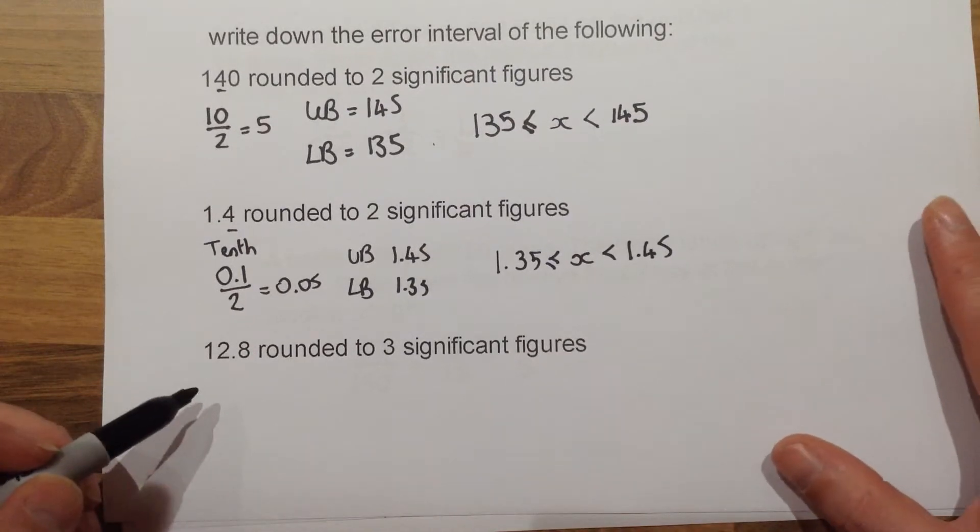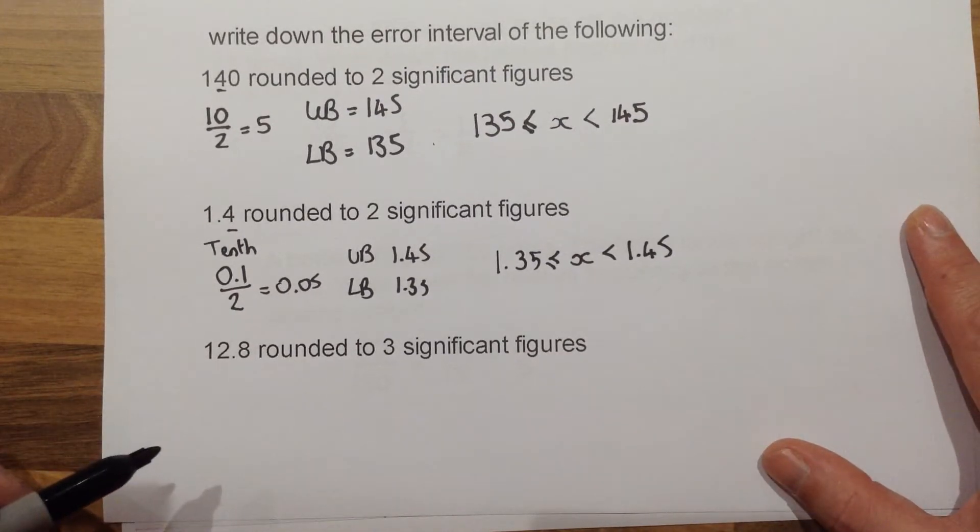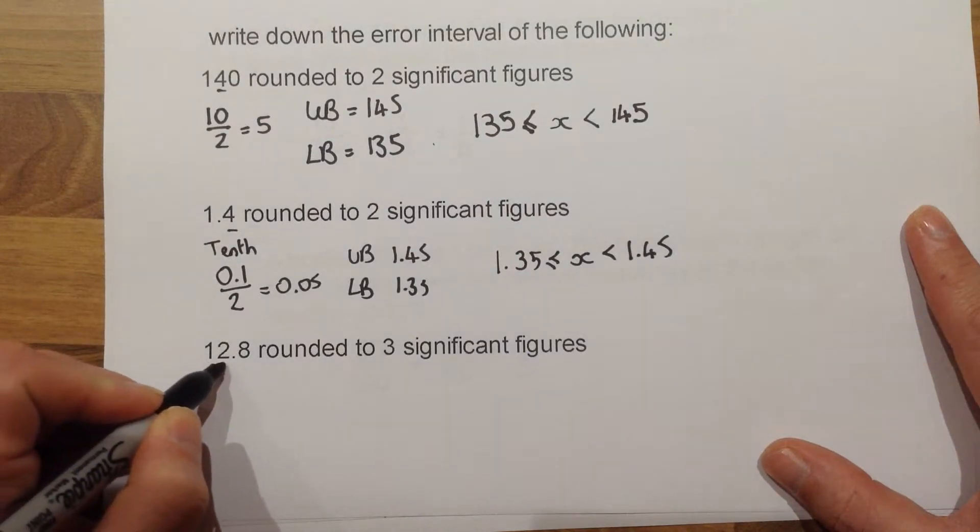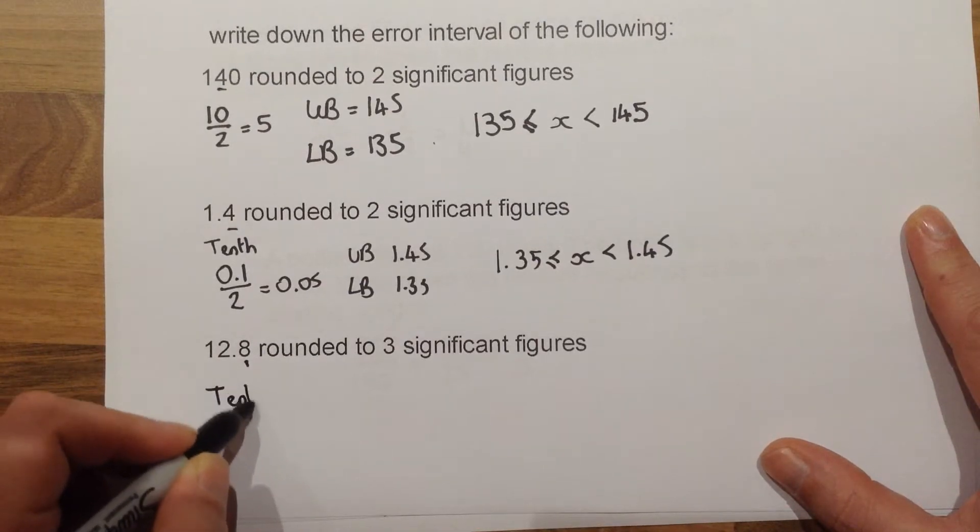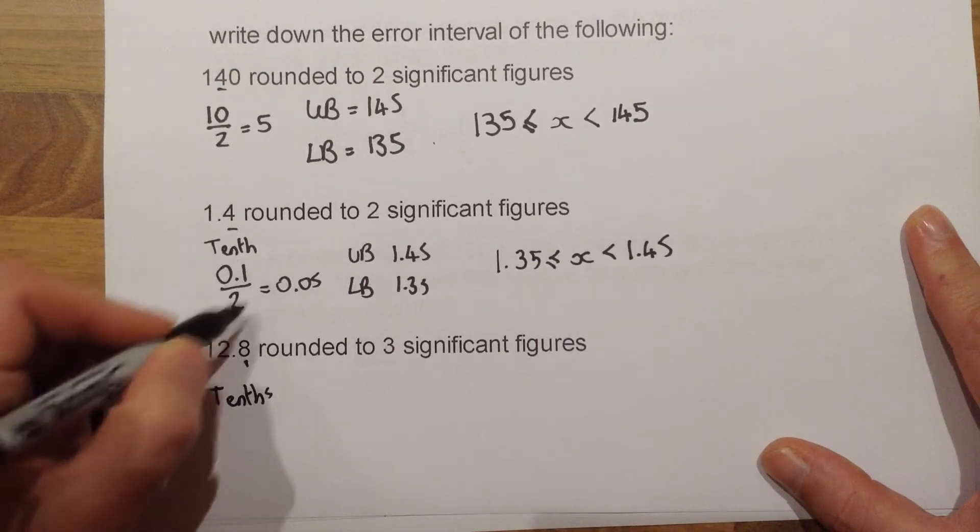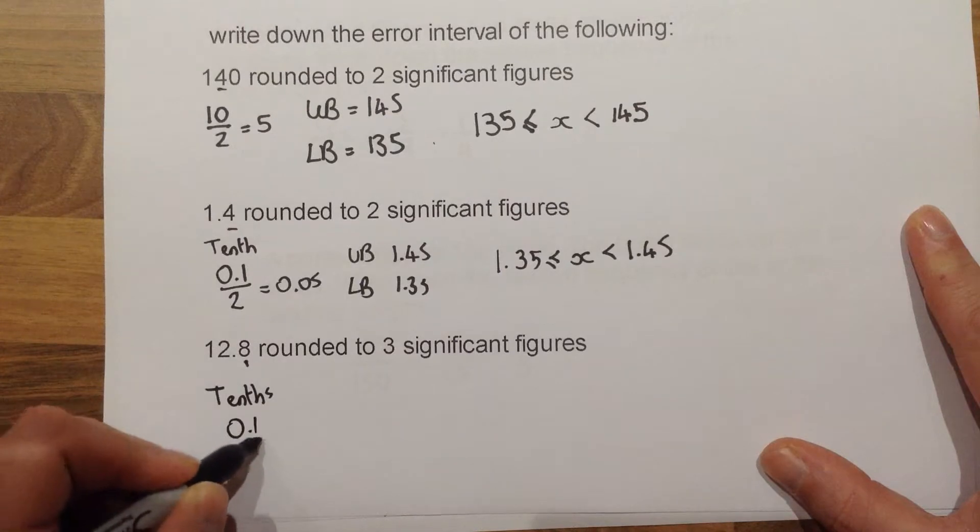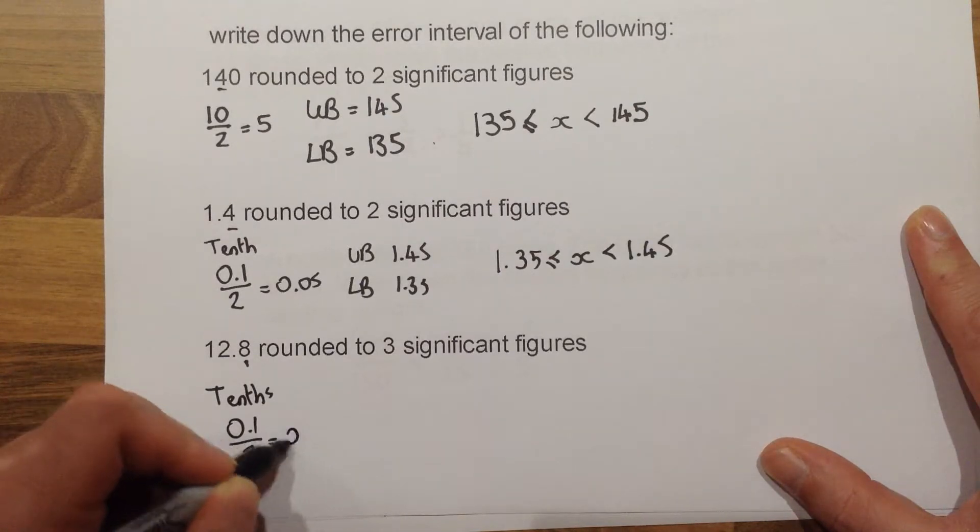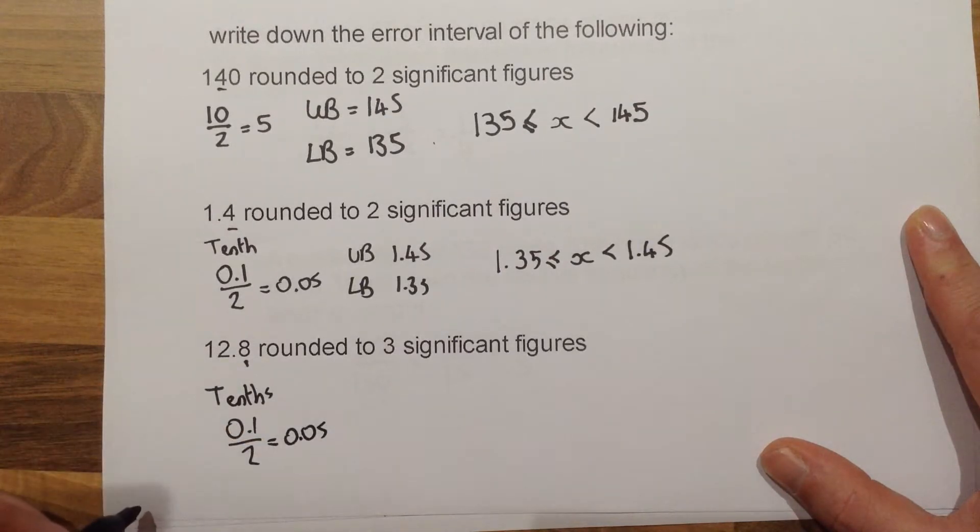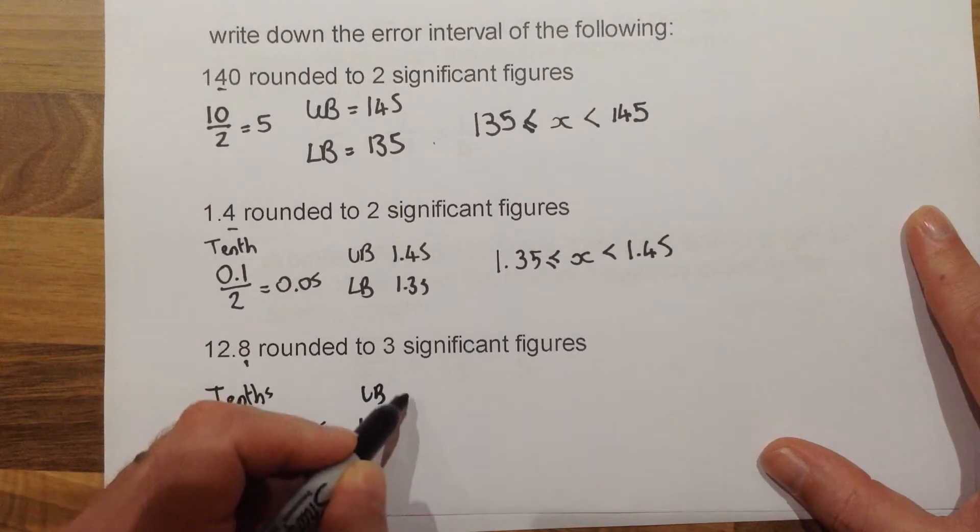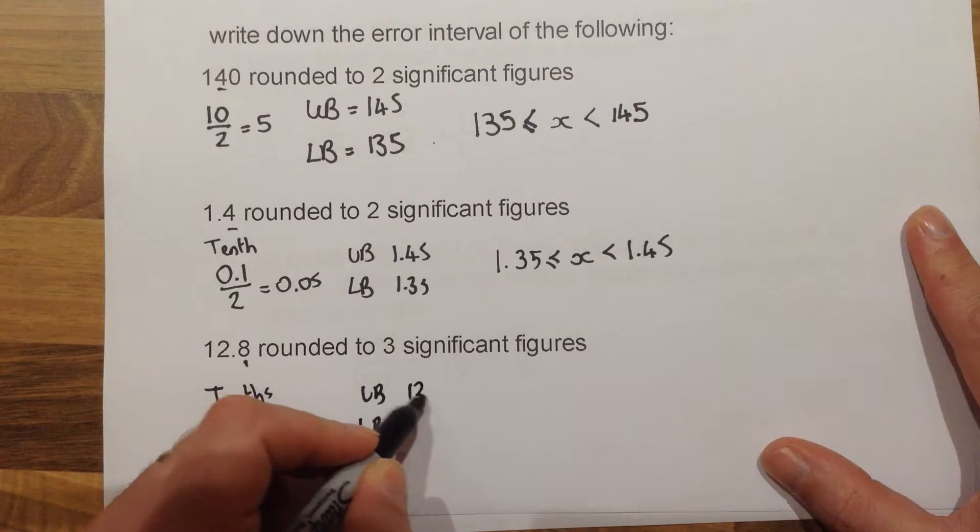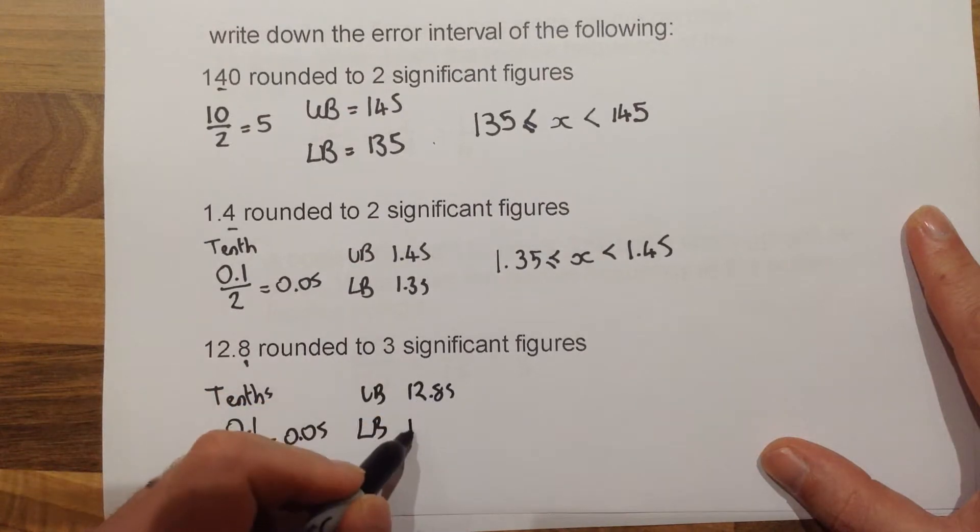For the third question on this section, 12.8 rounded to three significant figures. Again, we've got first, second, third significant figure is this column. Again, like the one before, that is tenths. So we can use the same idea. 0.1 divided by 2 gives us 0.05. So it's that much above and below for our upper and lower bound. So this would give us 12.85 and 12.75.